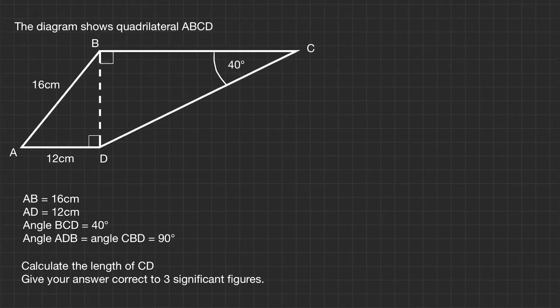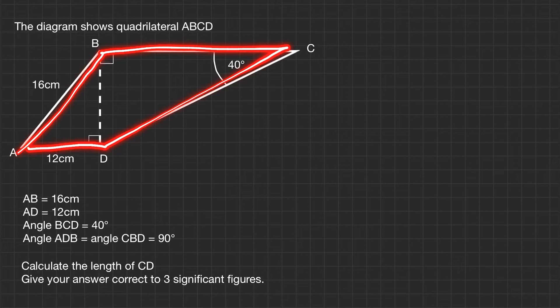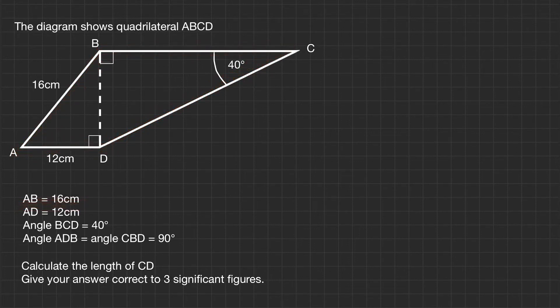Last but not least, we have the exam-style question. This is a high-level question. You're likely to see this at the end of a foundation paper or midway through a higher paper. Our question says, the diagram shows quadrilateral ABCD. AB is 16 centimeters, AD is 12 centimeters.